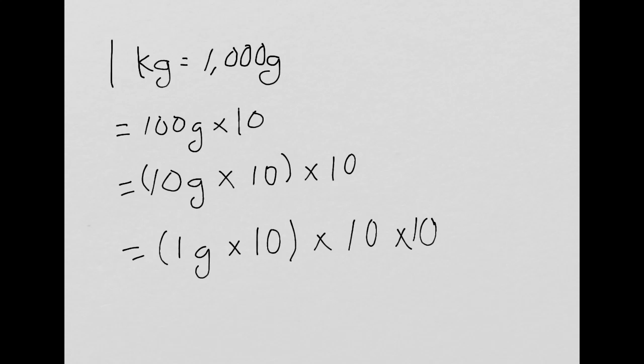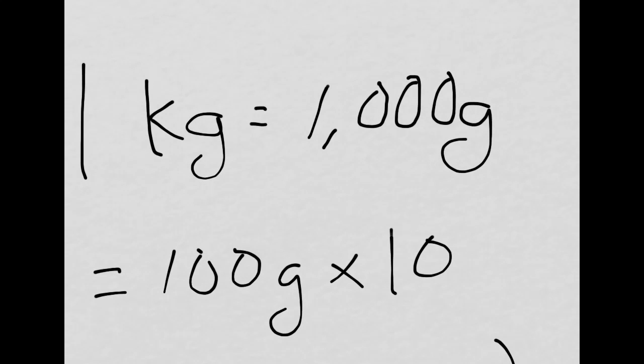And times 10 to make the kilogram. But the important relationship is this relationship here, that 1 kilogram equals 1,000 grams, and then that can be decomposed into smaller groups, like 100-gram groups, and there would be 10 of those to a kilogram.